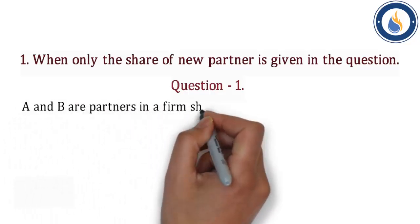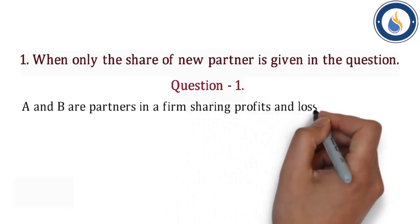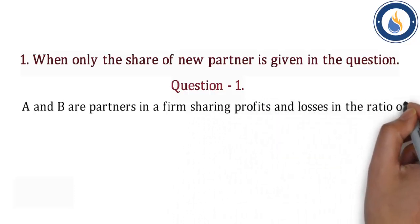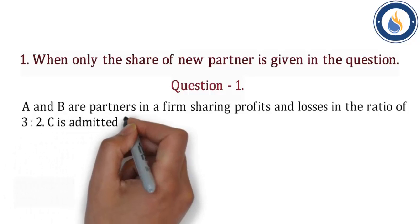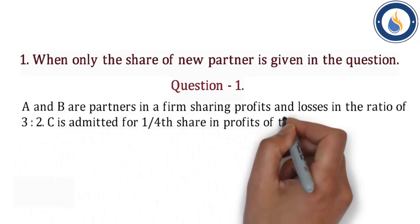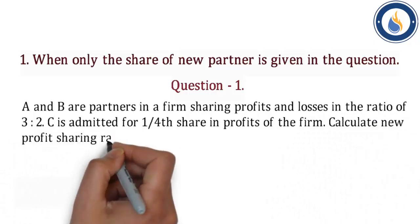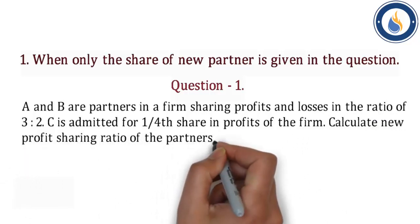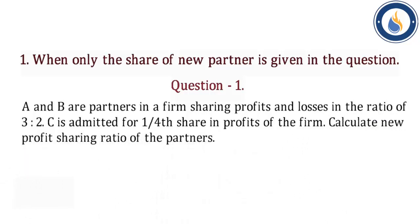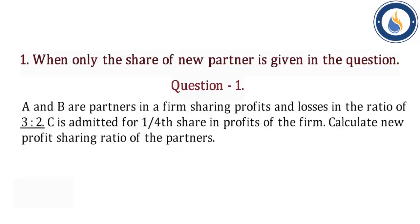Question 1 — When only the share of new partner is given: A and B are partners in a firm sharing profits and losses in the ratio of 3:2. C is admitted for 1/4 share in profits of the firm. Calculate the new profit sharing ratio of the partners.